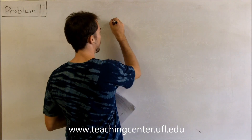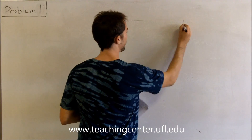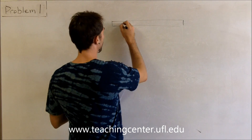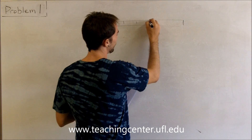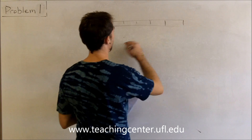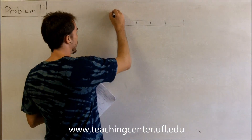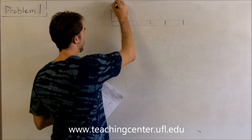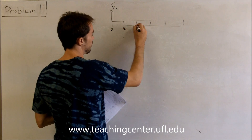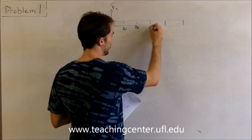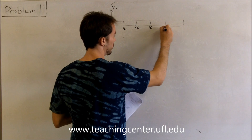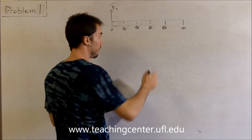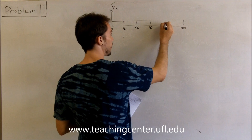Here's the meter stick. We have markings at 20, 40, 60, 80, and 100 centimeters. We have F1 applied here, and our pivot is at 80 centimeters.